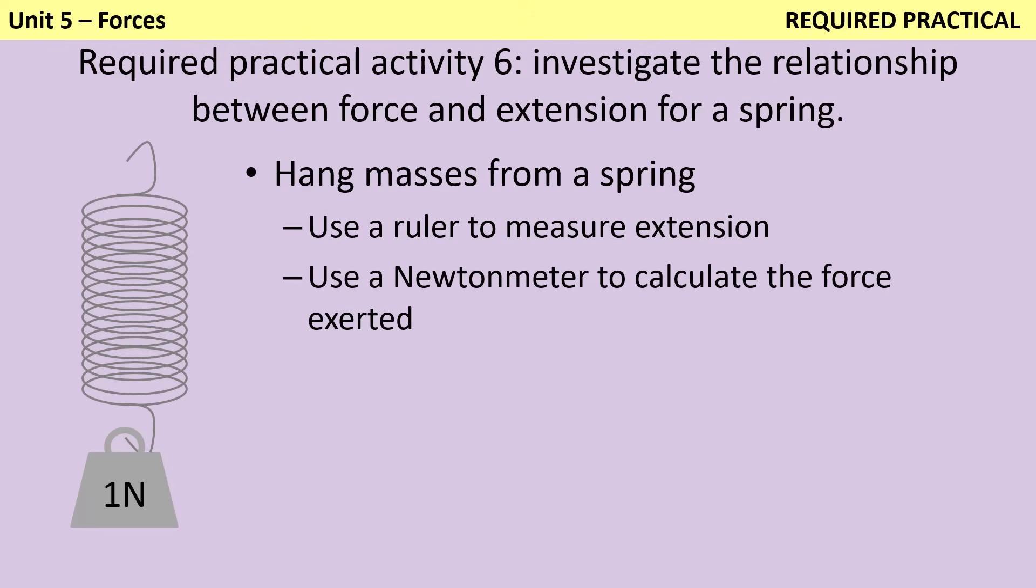In the first required practical for GCSE Physics Paper 2, you suspend a spring using a clamp stand and a clamp, hang masses from it, and then use a ruler to measure extension, which is the final length of the spring after you add the masses minus the initial length when there was nothing hanging from the spring.